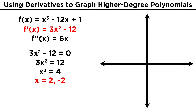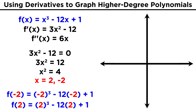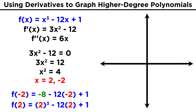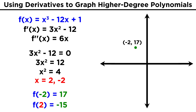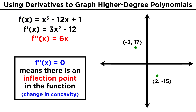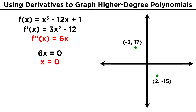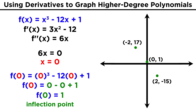Points of interest occur when x equals negative 2 and 2. Plugging into the original function: for x equals negative 2, we get negative 8 minus 12 times negative 2 plus 1, which gives 17 — so the point (−2, 17) is on the function. For x equals positive 2, we get 8 minus 24 plus 1, which is negative 15 — so the point (2, −15) is on the function. For the inflection point, 6x equals zero when x equals zero, so there is an inflection point at x equals zero. Plugging zero into the function gives 0 minus 0 plus 1 equals 1, so the inflection point is at (0, 1).